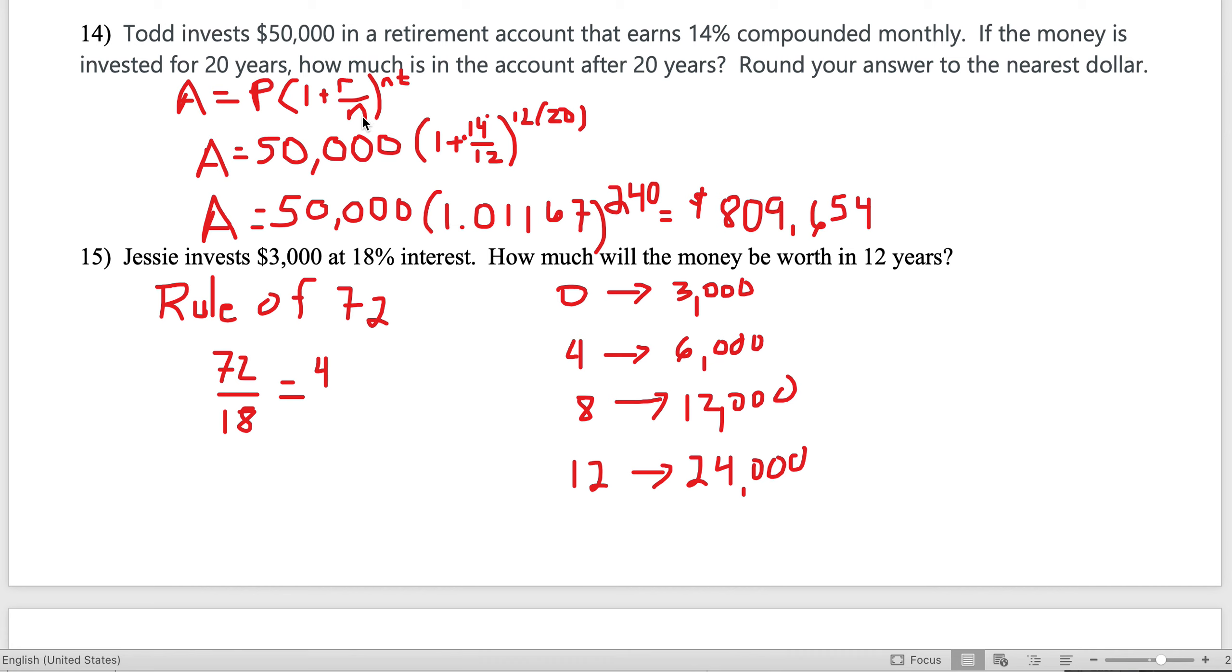Number 14: Todd invests $50,000 in a retirement account that earns 14% compounded monthly. 'Monthly' is a big word right there. If the money is invested for 20 years, how much will he earn? This is the equation I suggested you put in your phone under an album's picture.